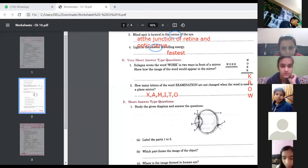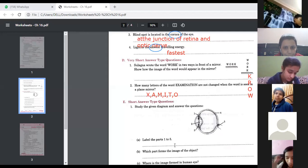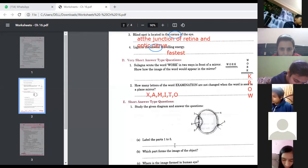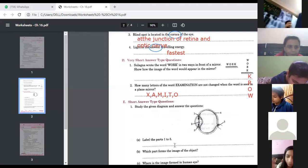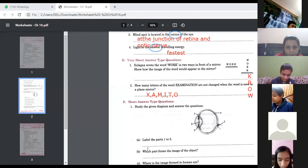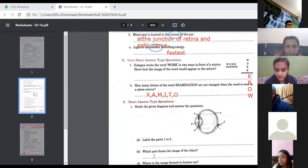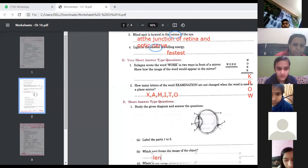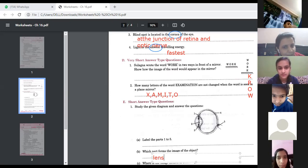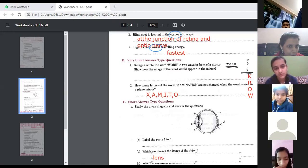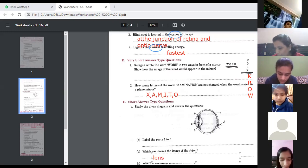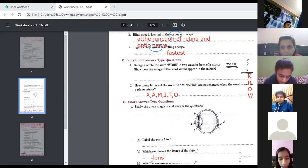Next, study the following diagram and answer the questions. Children, label this diagram quickly. Label the parts one to five, you know already. Label these parts. Next we'll discuss what which part forms the image of the object. Which part forms the image? Lens forms the image.